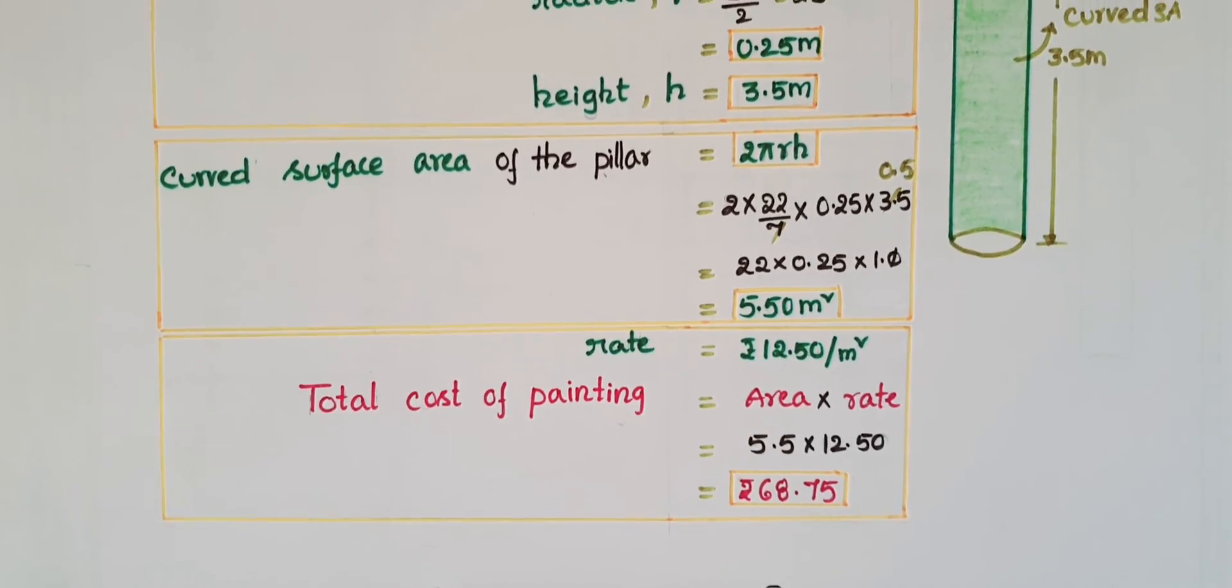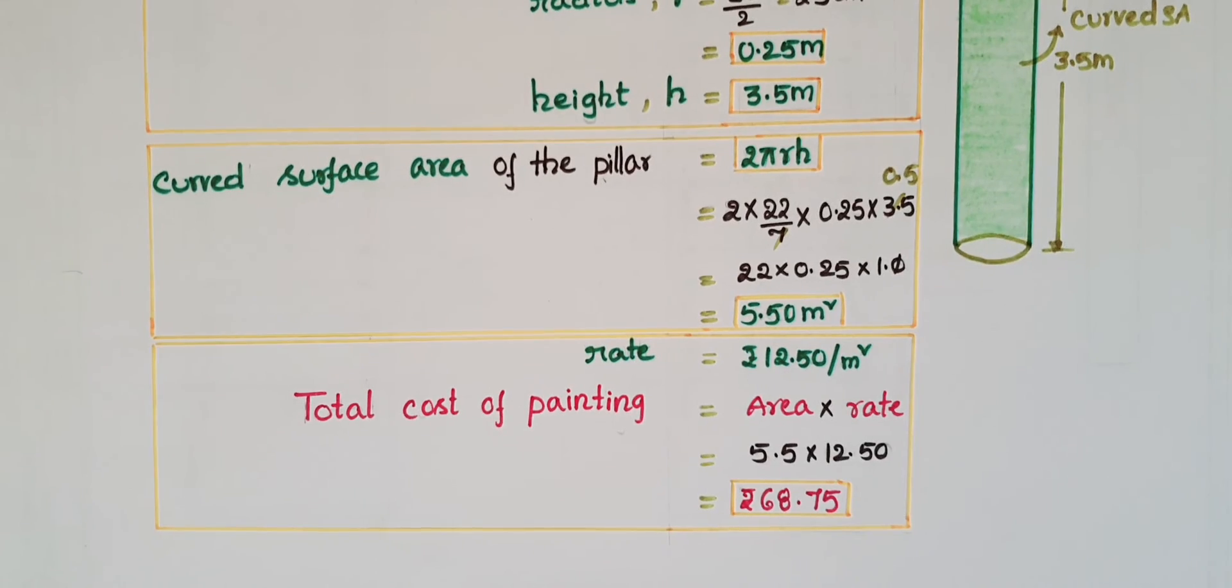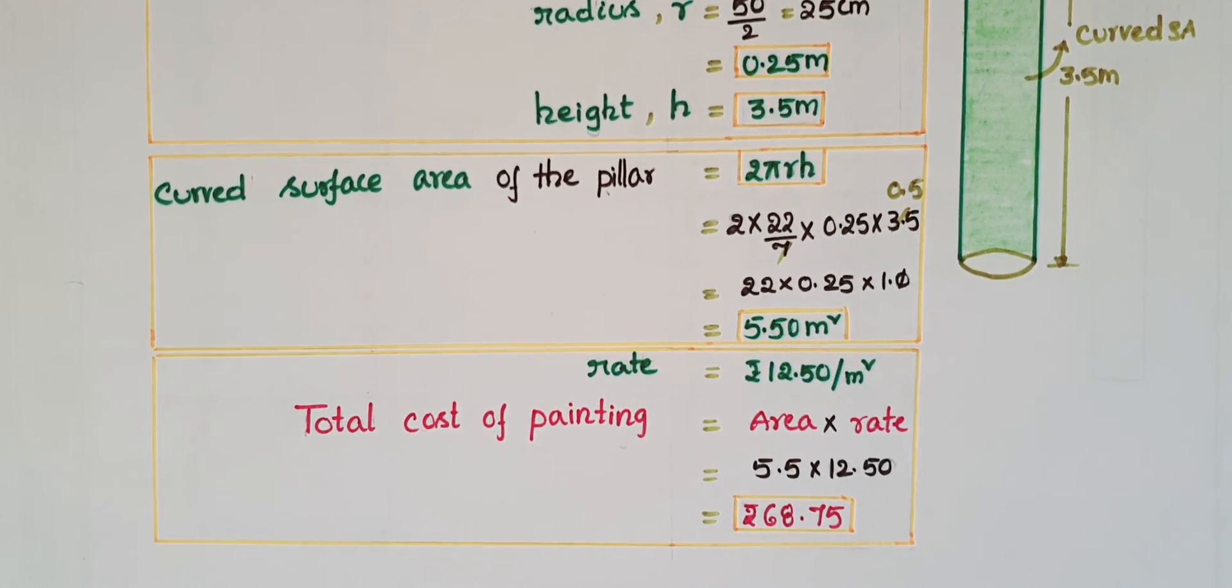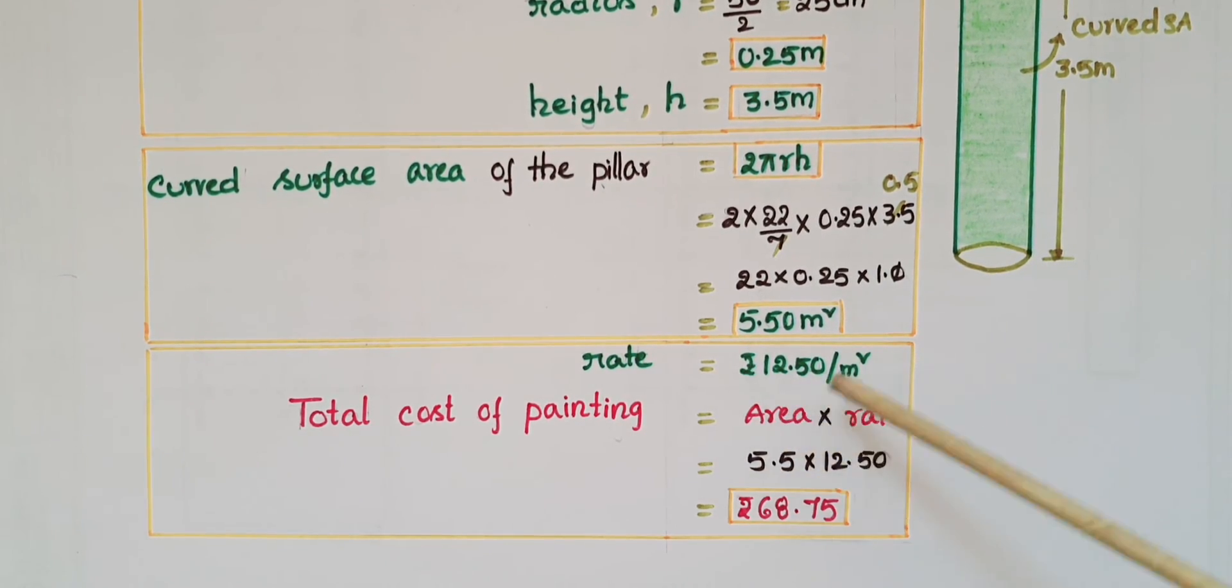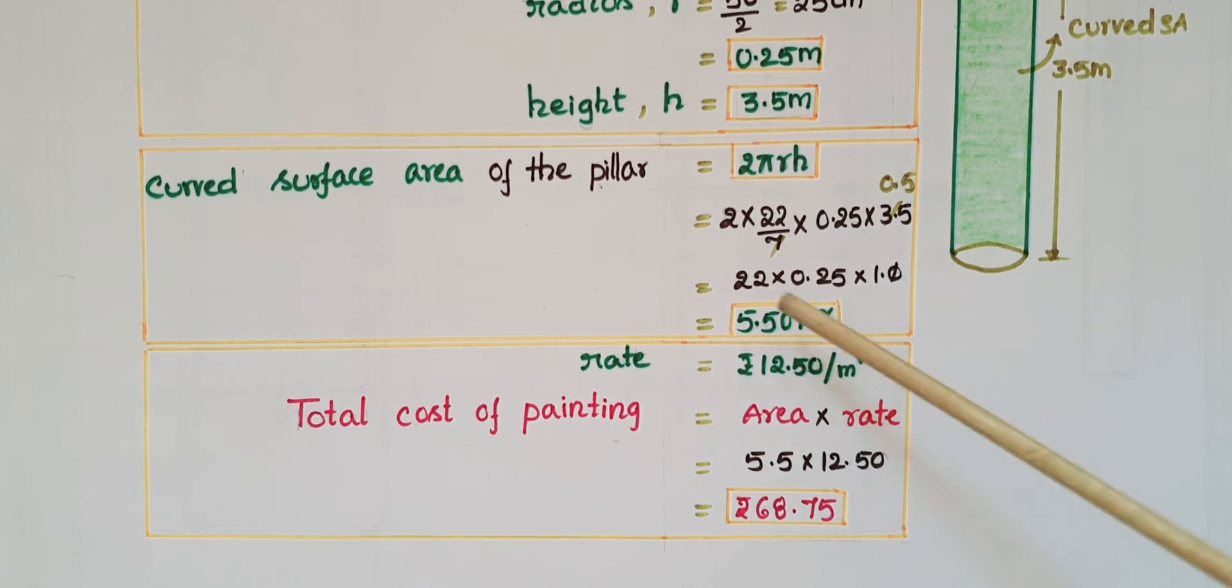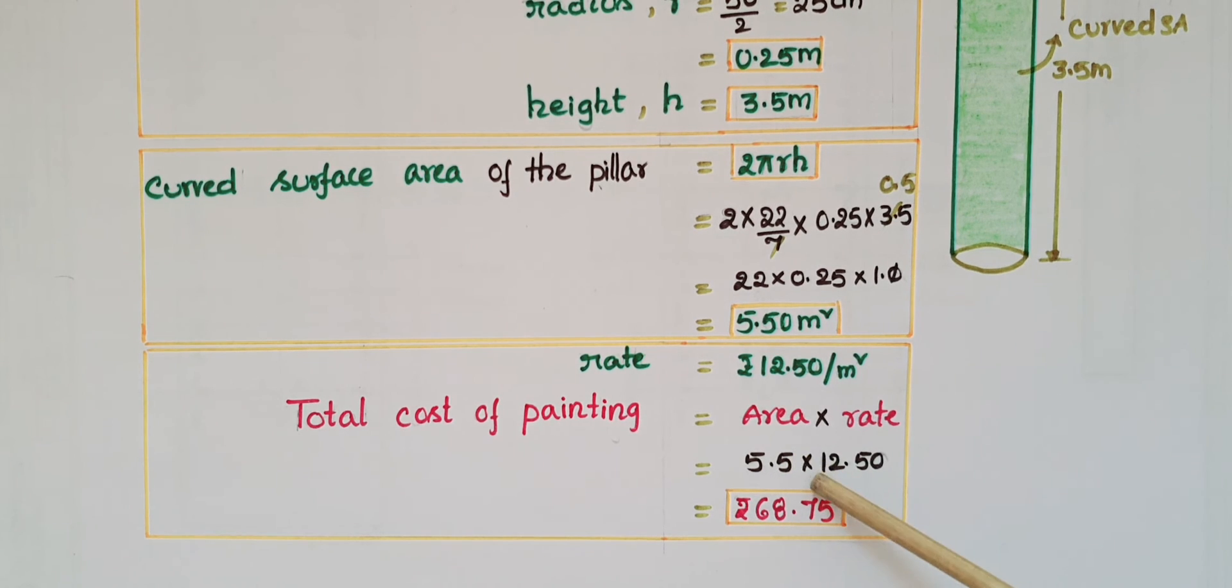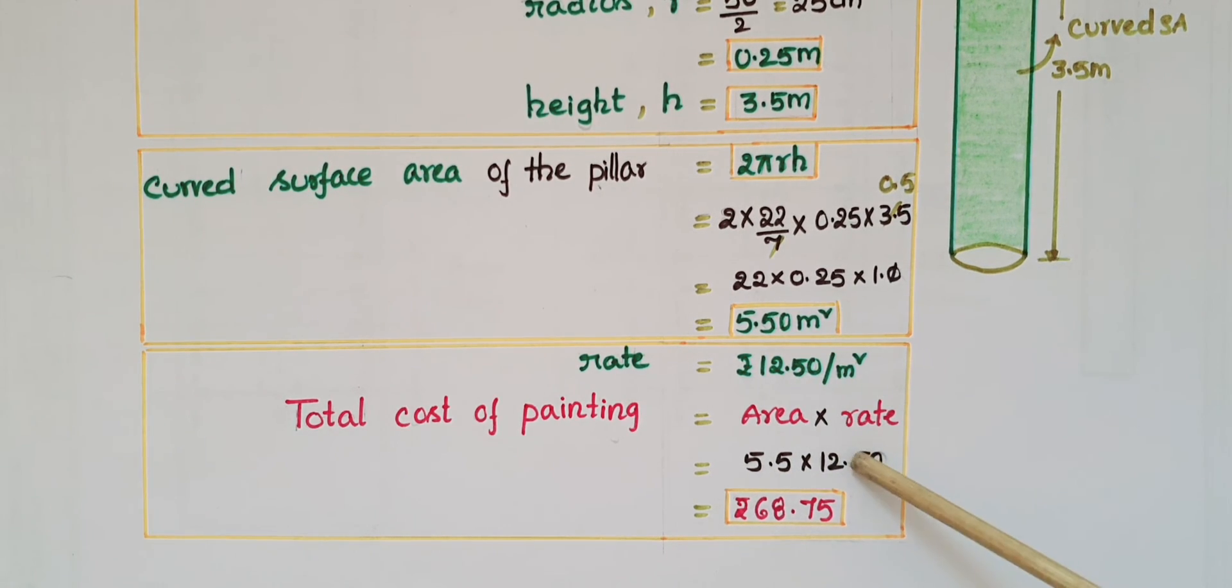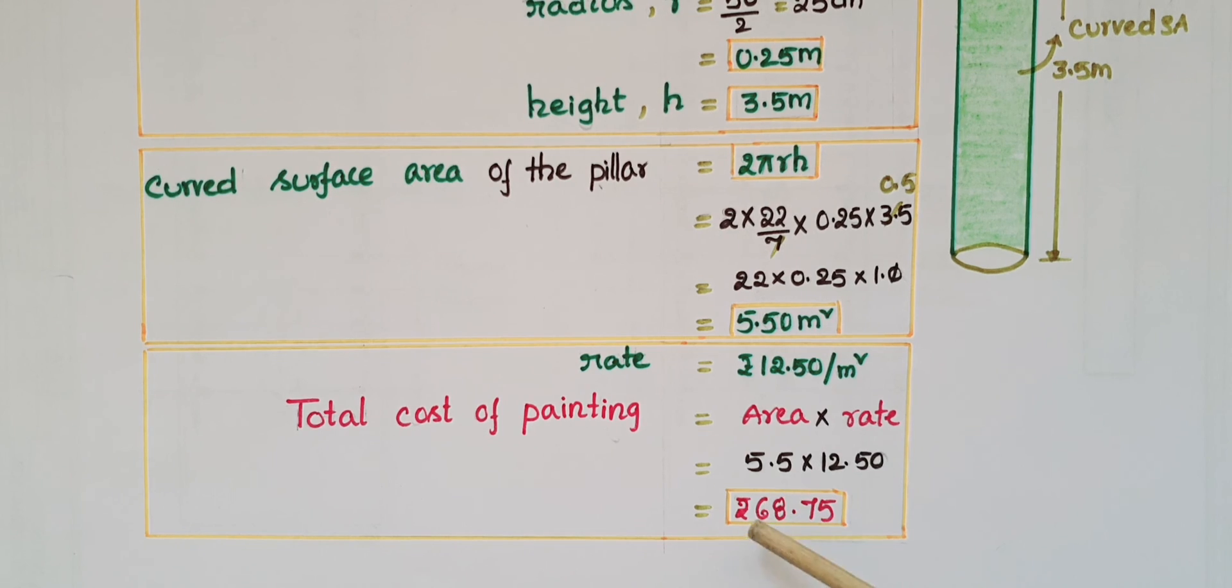So we have to find the total cost of painting, which equals area into rate. Here the curved surface area is 5.5 meter square, so 5.5 into 12.50 equals 68.75 rupees.